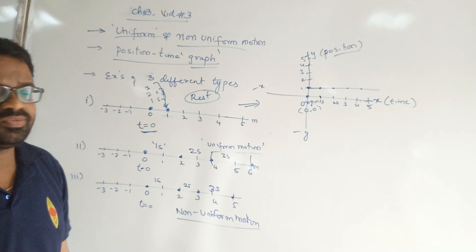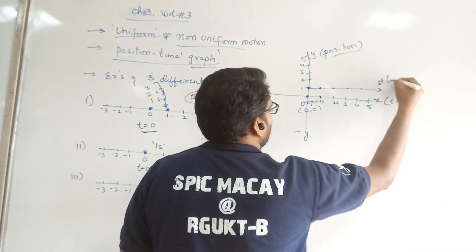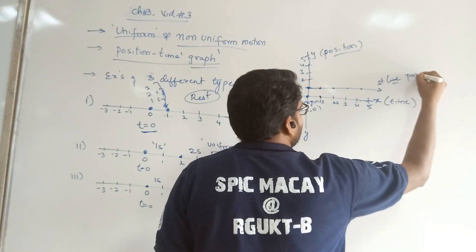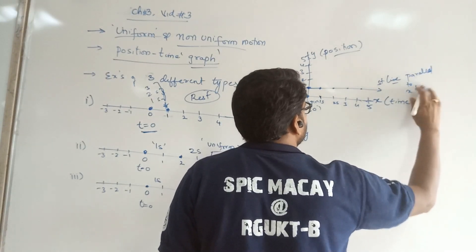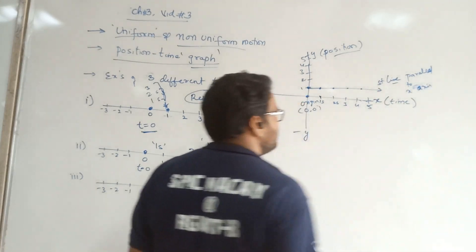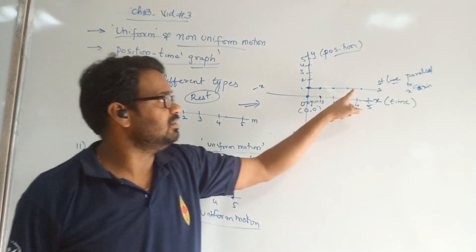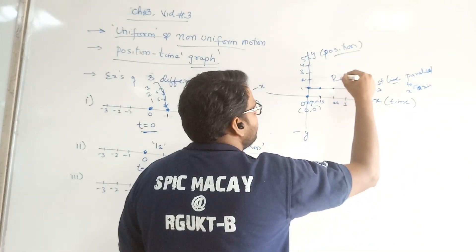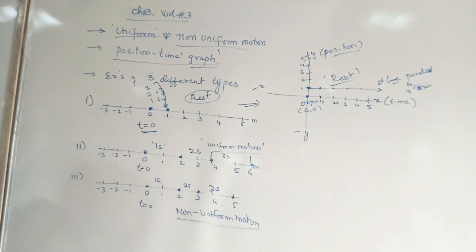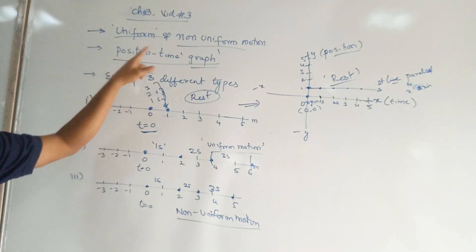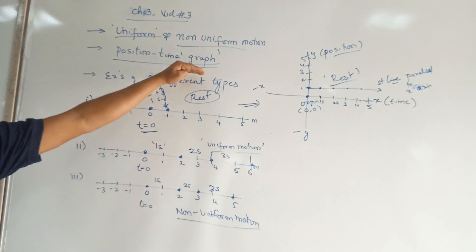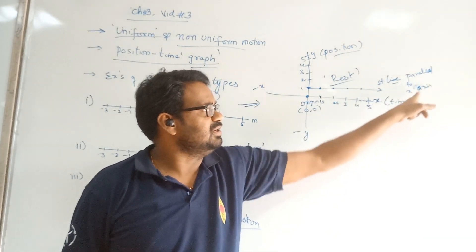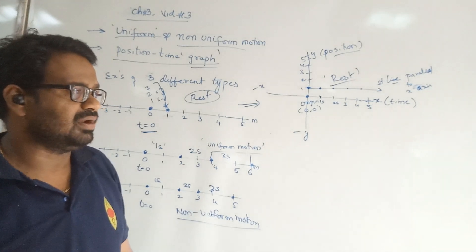What kind of line have you got? It is a straight line. How is it present? It is present parallel to the x-axis. And what is present on the x-axis? Time. So if you find a line which is parallel to the time axis, then that is a body which is at rest position. The position-time graph of a body at rest is a straight line parallel to the x-axis.